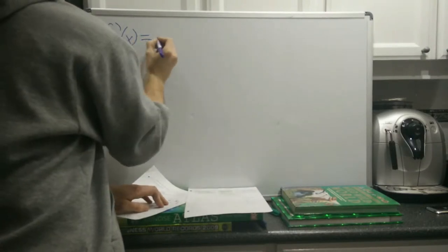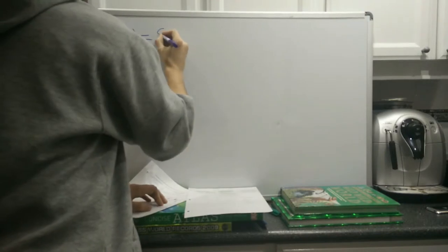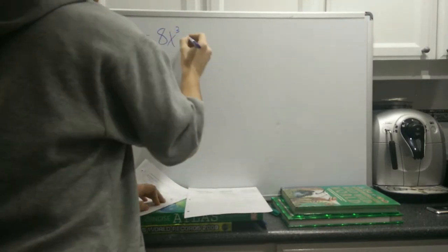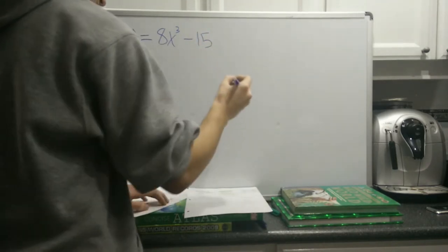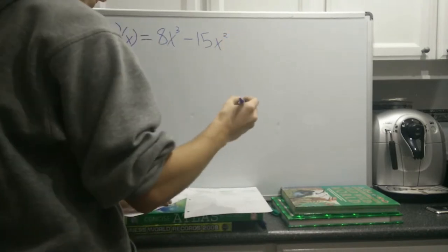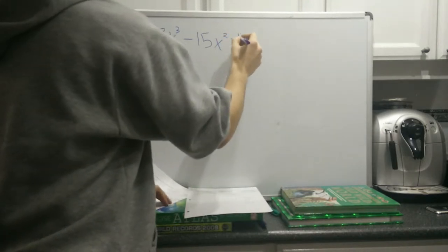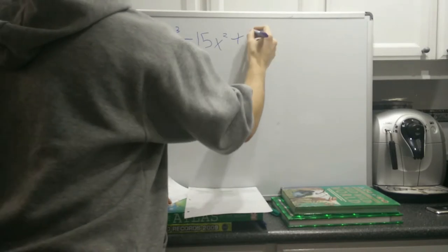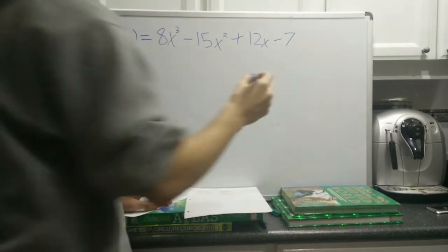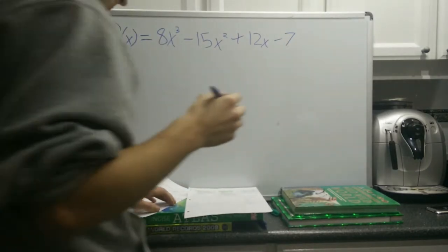So f prime of x equals 8x cubed minus 15x squared plus 12x minus 7. I'm intrigued at what's being written behind me, but I will not turn around. You're strong, I'm strong. What has Stefan been writing?